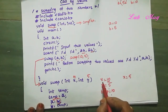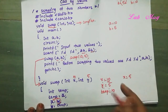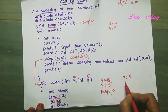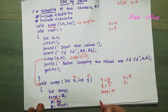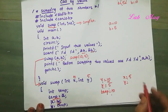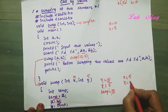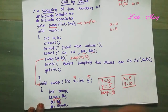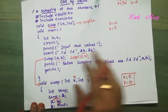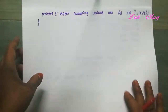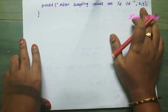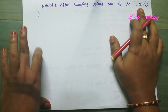The output after swapping: x is equal to 5 and y is equal to 10. We print this using printf with format specifiers %d for x and %d for y, so 5 and 10 are printed out.